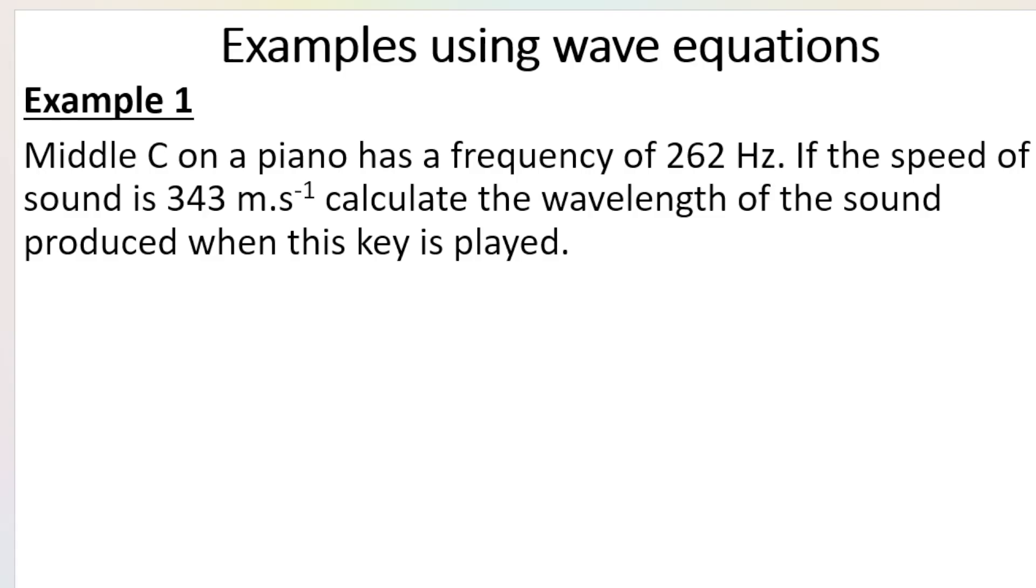Now how do I use this equation in an example? Here's a very basic example. I play middle C on a piano. Middle C is a key on a piano and they give me the frequency of middle C. They give me the speed of sound, and they want to know the wavelength of the sound that is produced when the key is played. So you always write your formula first.